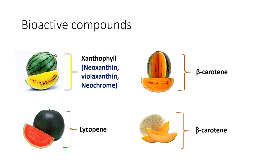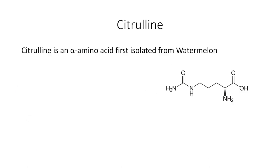Besides these pigments, all these melons contain a good quantity of vitamin C. Another important bioactive compound present in watermelon is citrulline. Citrulline is an alpha amino acid which was first isolated from watermelon, and that happened in Japan. Later, this compound received great attention for its vasodilatory properties and is now commercially used as a supplement for various ailments related to vasodilatory effect.